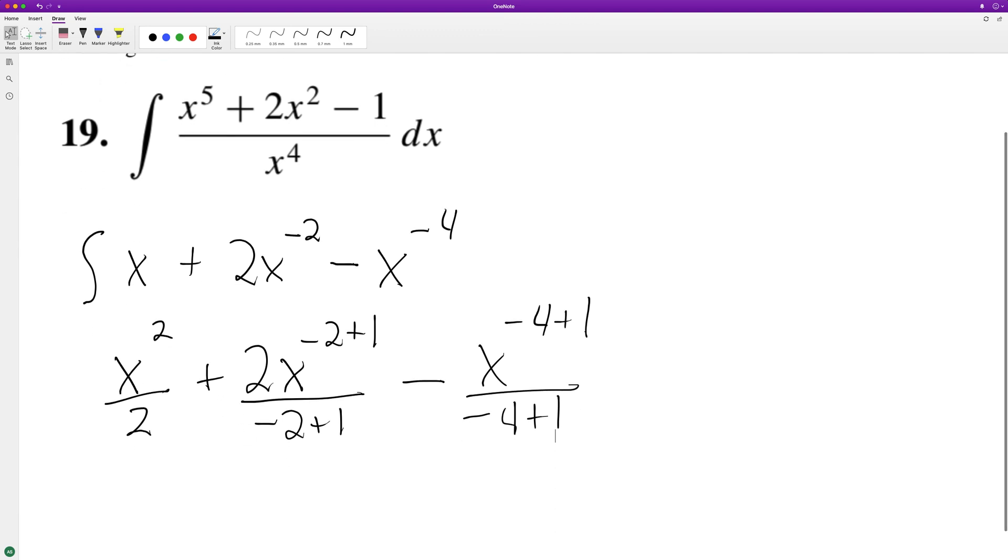So what we're going to end up with here is, well, before we got this, so one half x squared, minus, negative one, so that just becomes minus two. And this is just x raised to the negative one.